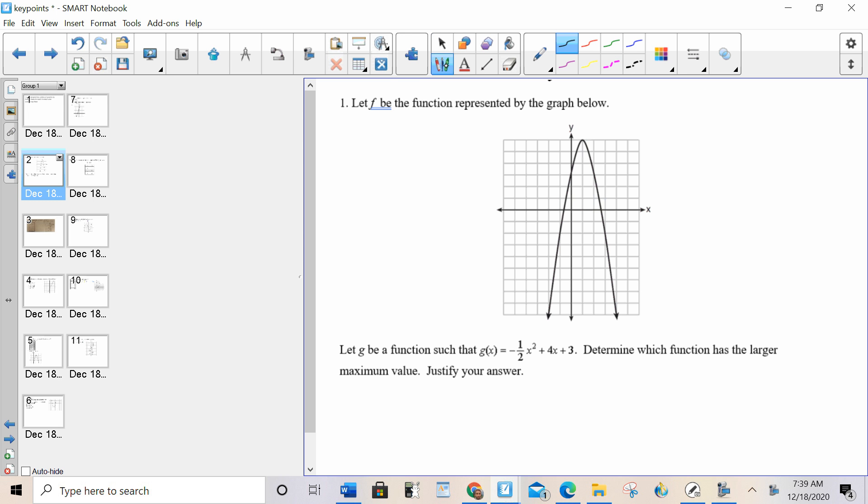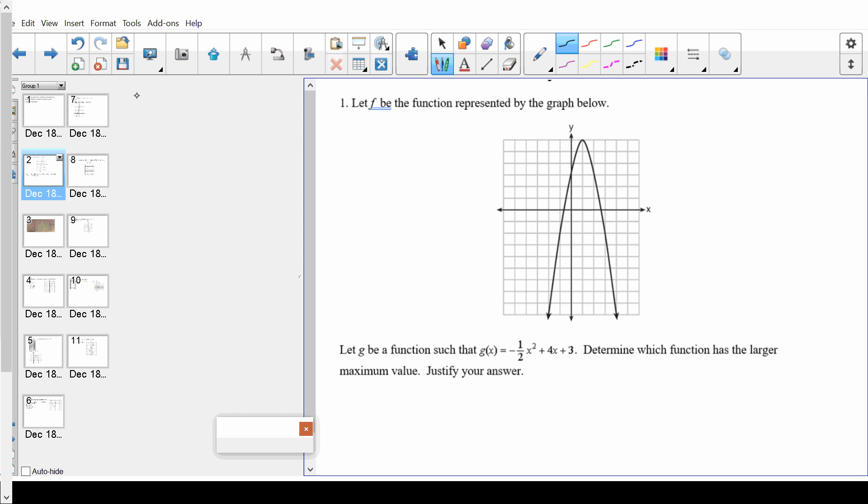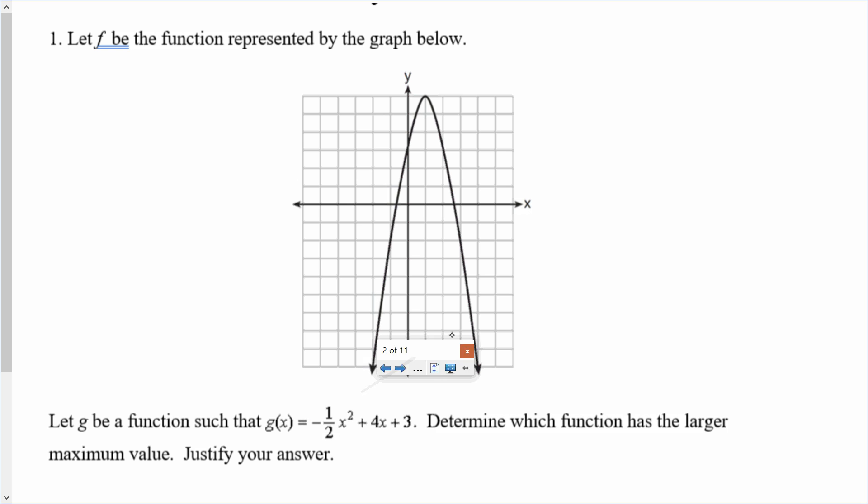So let f be the function represented by the graph below. Let g be a function such that g of x equals. So there's two separate functions. There's f, called f of x, which is the graph, and there's g of x, which is the equation. Two separate functions. One's a graph, one that's giving you a graph, one that's giving you an equation. Determine which function has the larger maximum value.